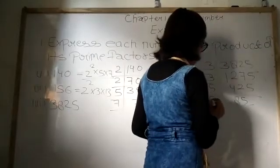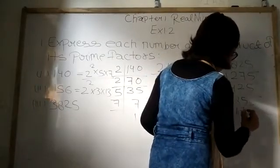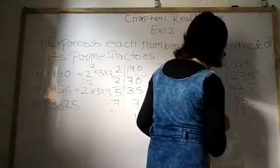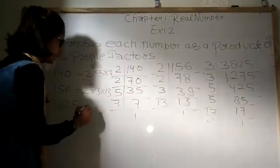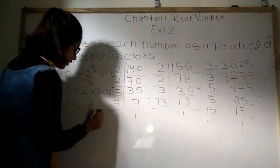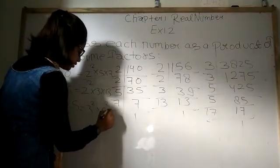Now by which number? Once again by 5. 5 times 17 is 85. Now by 17. 17 times 1 is 17. So what is our product? That is 3 square into 5 square into 17.